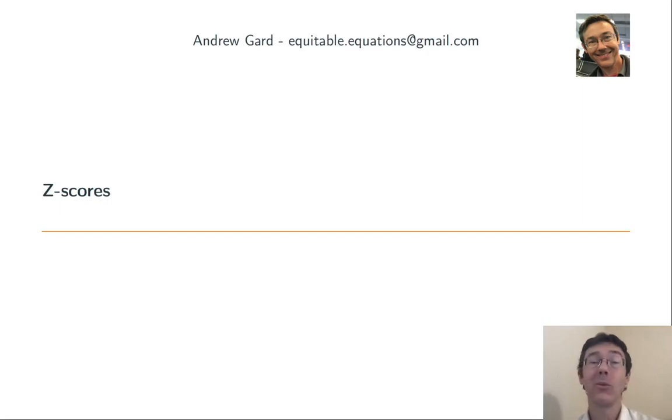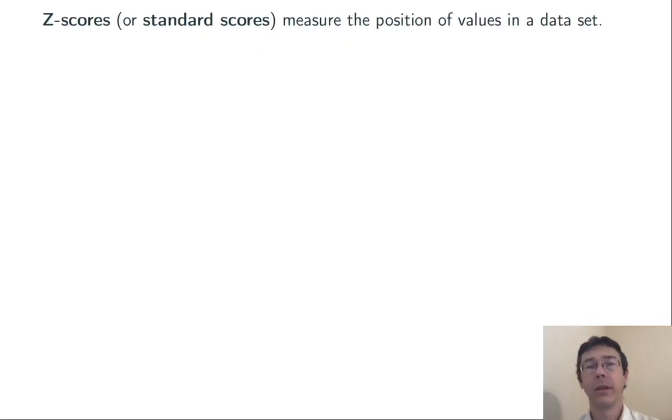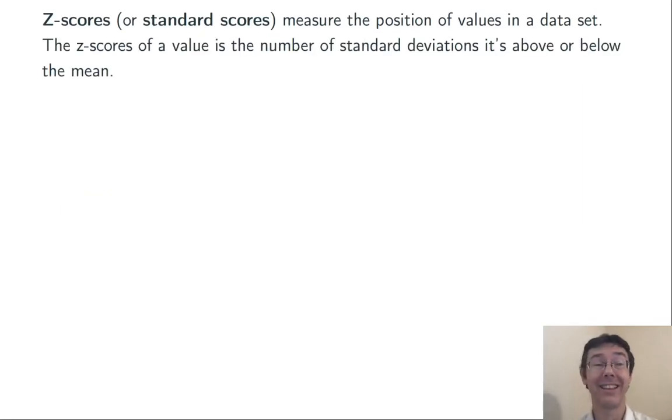Hey everybody, today we're talking about z-scores, also known as standard scores. This is just a way of measuring relative position within a data set. A z-score is the number of standard deviations that a value is above or below the mean.